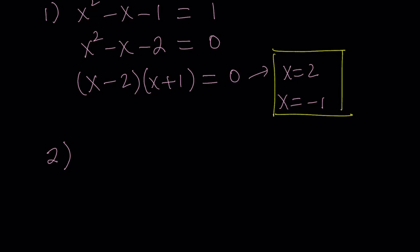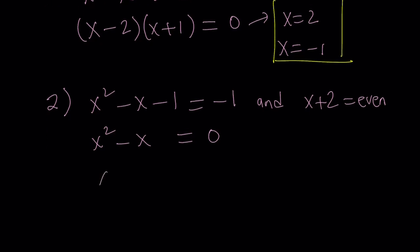Case number 2. We have the base equal to negative 1, and the exponent must be even. Now, if you add 1 to both sides, you get a simpler quadratic equation. It's quadratic, but it's factorable, very factorable. And from here, you get x times x minus 1 equals 0, and this gives you x equals 0 or x equals 1.